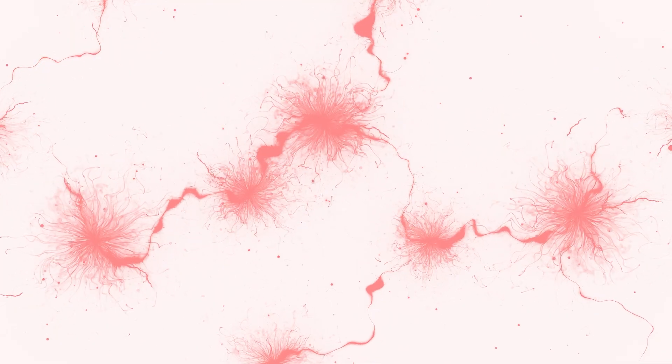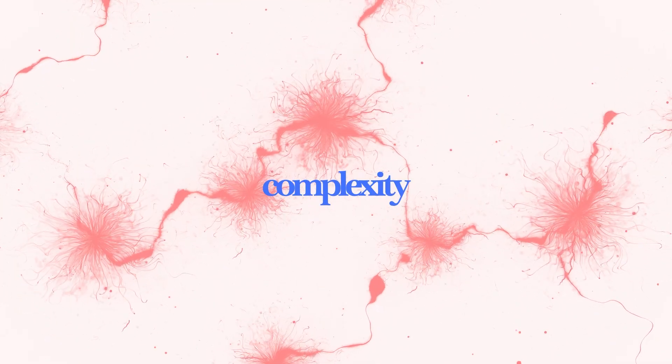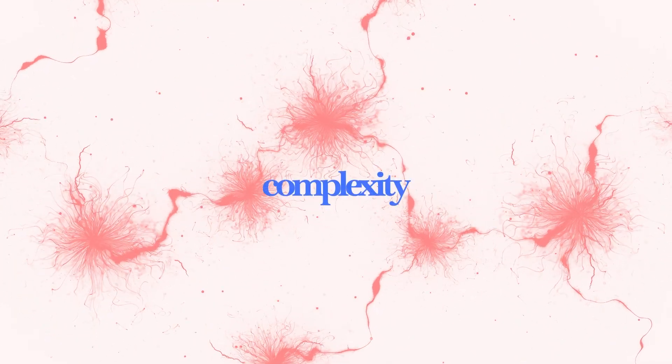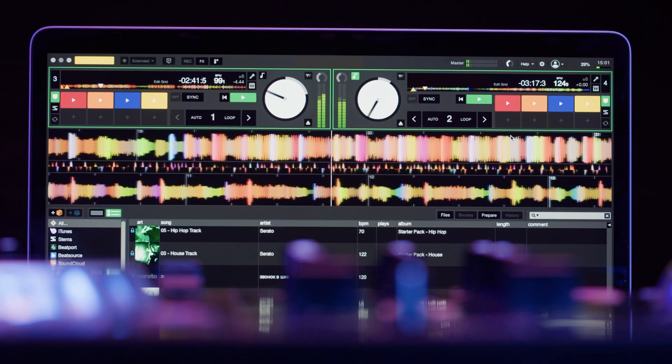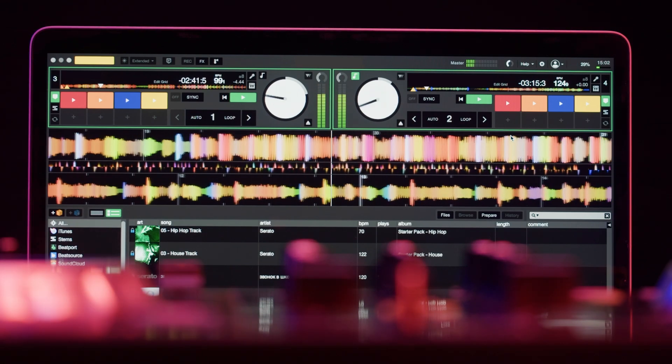Another approach looks at complexity. Conscious brains produce patterns that are neither boringly regular nor pure random noise. Think of it like music. A flat tone is dull static. Pure noise is meaningless. Consciousness sits in between, like a symphony - structured, layered, hard to predict, but not chaotic.